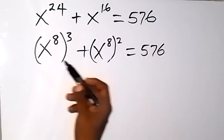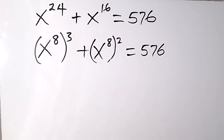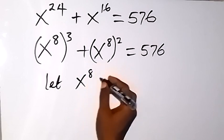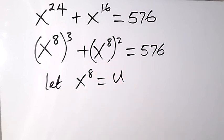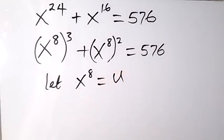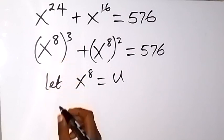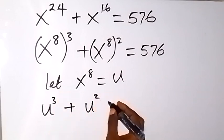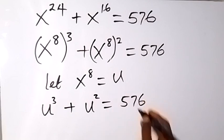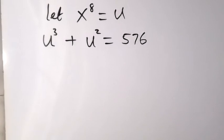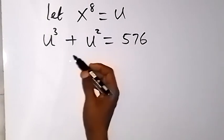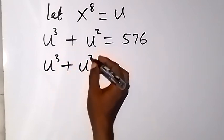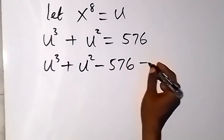From here we have x raised to power 8, and x raised to power 8. We can use a letter to represent that, so let x raised to power 8 be equal to u. We can replace anywhere we see x raised to power 8 with u, so the equation becomes u raised to power 3 plus u squared, which will be equal to 576.